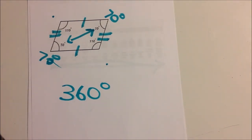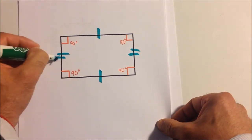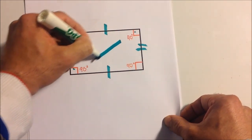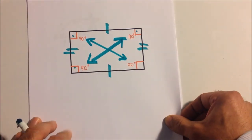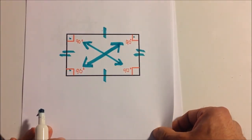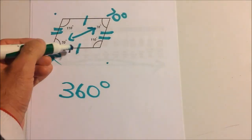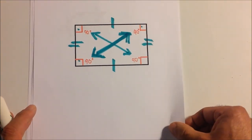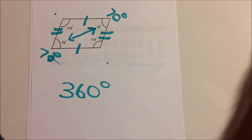Then we have a rectangle. A rectangle has two pairs of parallel sides, and the opposite angles are congruent — in this case they're all the same. A rectangle satisfies the same requirements as a parallelogram: two pairs of parallel sides and congruent opposite angles. So a rectangle is a parallelogram, but a parallelogram is not necessarily a rectangle. On a quiz, you can say a rectangle is a parallelogram.